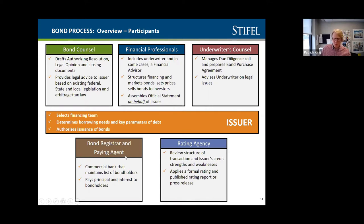Other participants include the bond registrar and paying agent — typically a bank — that processes payments and makes sure the school district is sending money to investors on time. The rating agency — really two main options: Moody's or Standard & Poor's — names most of you have heard. Fitch is another agency that rates a few Ohio school districts. Their job is to assign a credit rating as a proxy to the market in terms of interest rate and creditworthiness.